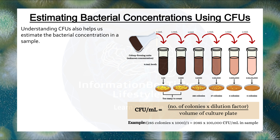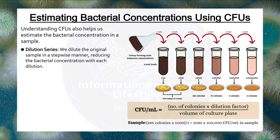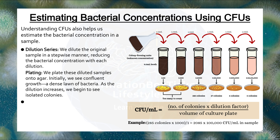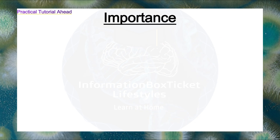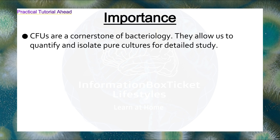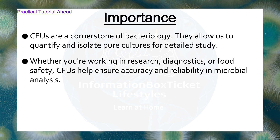Understanding CFUs also helps us estimate the bacterial concentration in a sample. Dilution series: we dilute the original sample in a stepwise manner, reducing the bacterial concentration with each dilution. Plating: we plate these diluted samples onto agar. Initially, we see confluent growth — a dense lawn of bacteria. As the dilution increases, we begin to see isolated colonies. Counting colonies: at a specific dilution, we count the colonies. For example, at a 1 in 10 to the minus 6 dilution, we might count 14 colonies. CFUs are a cornerstone of bacteriology, allowing us to quantify and isolate pure cultures. Whether you're working in research, diagnostics, or food safety, CFUs help ensure accuracy and reliability in microbial analysis.